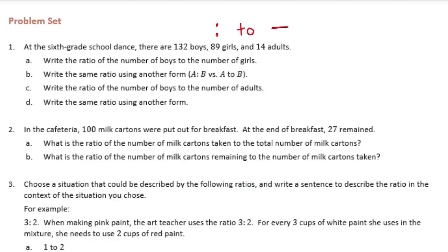So the ratio for the number of boys to the number of girls: there are 132 boys, 89 girls, and 14 adults. So this first one is just asking us about the boys and the girls, so we're going to focus on 132 and 89. Now order matters when we're talking about ratios. So the boys need to come first. We have 132 boys to, and you can either use a colon or you can use the word 'to'.